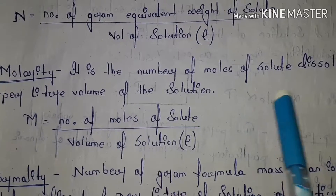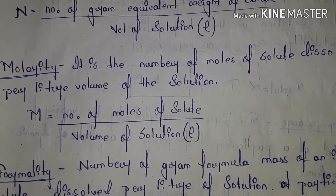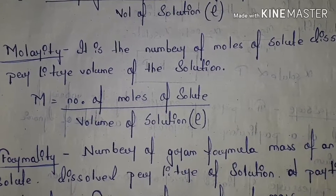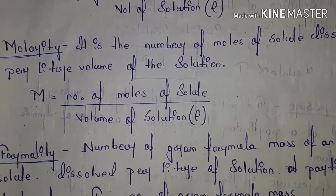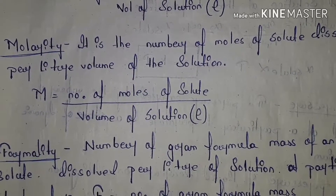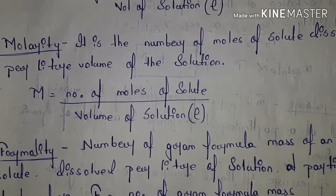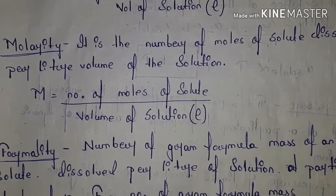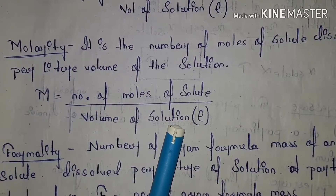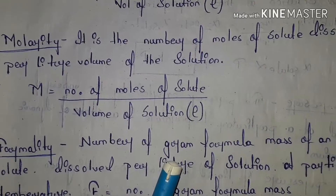Molarity: it is the number of moles of solute dissolved per liter volume of solution. Moles — for example, sodium chloride has a mass of 23, so 23 grams equals 1 mole. Molarity M = number of moles of solute / volume of solution in liters. Its unit is mole per liter.